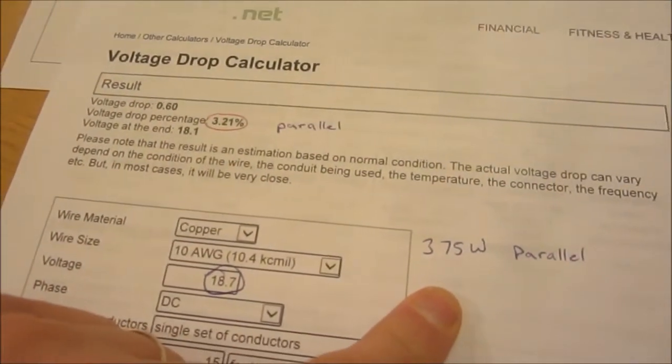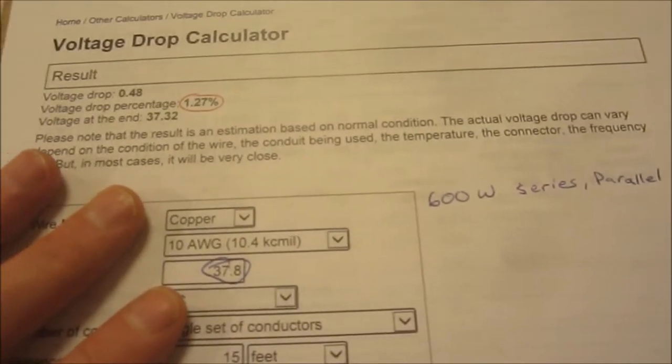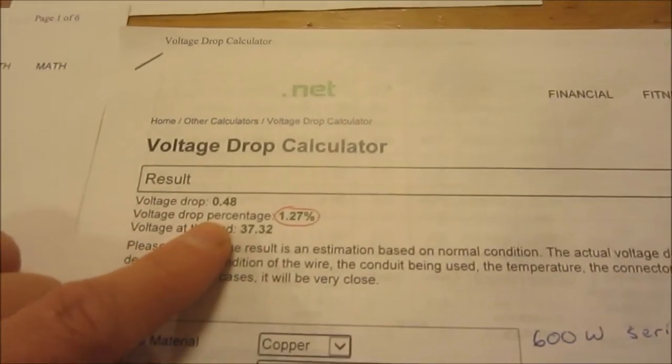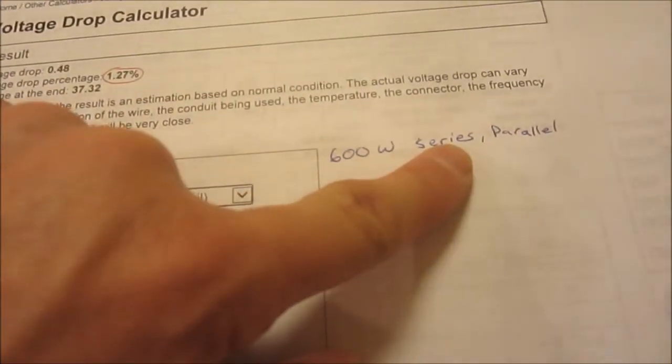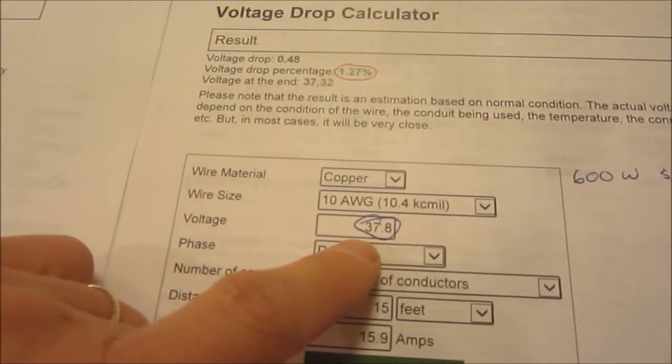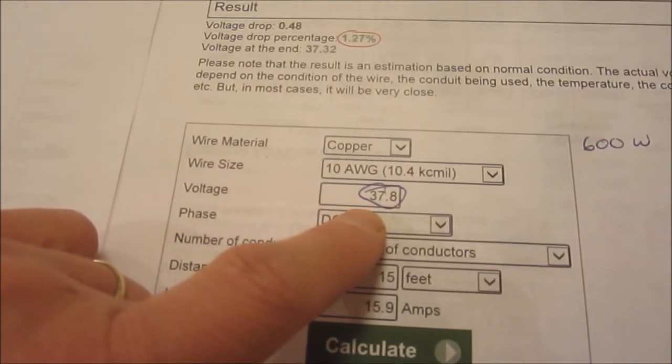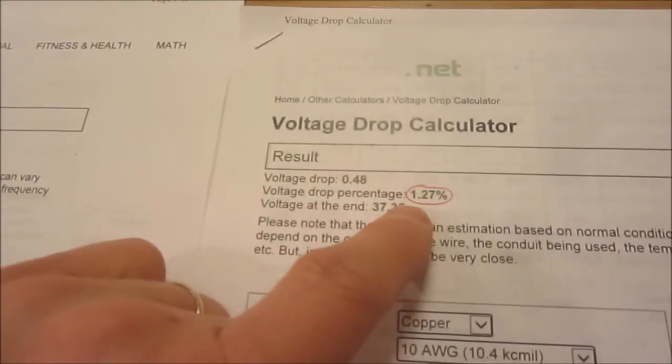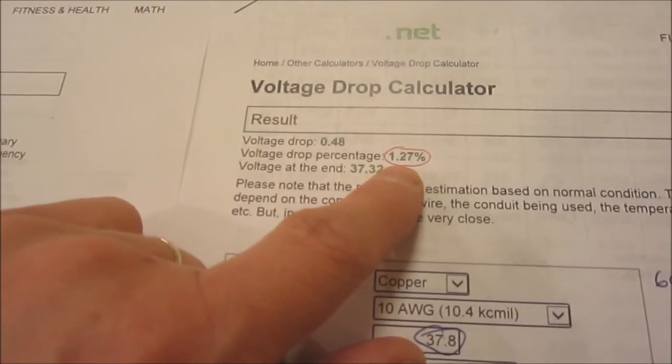So let's go over to my other battery bank, my new one. Voltage drop for my 600 watt in series parallel, so that bumps up my voltage to 37.8 volts. That's pretty nice, I only have a voltage drop of 1.27%.